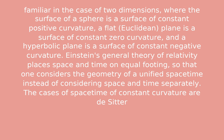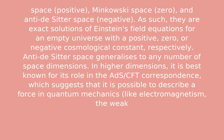Einstein's general theory of relativity places space and time on equal footing, so that one considers the geometry of a unified space-time instead of considering space and time separately. The cases of space-time of constant curvature are de Sitter space, Minkowski space, and Anti-de Sitter space.